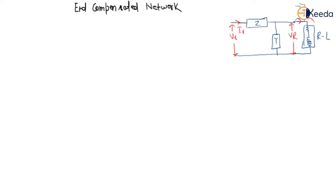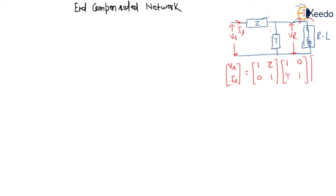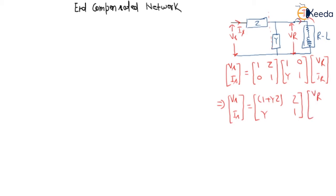What we can see from here is that if we want to write the ABCD parameters, we can break this into two parts and write VS as the product of two matrices: [1, Z; 0, 1] and [1, 0; Y, 1], multiplied by [VR; IR]. Multiplying both parts gives us the matrix [1+YZ, Z; Y, 1].